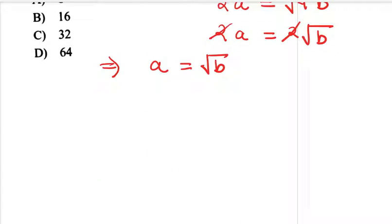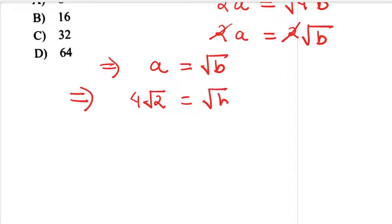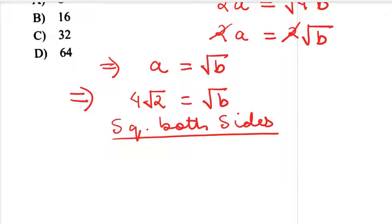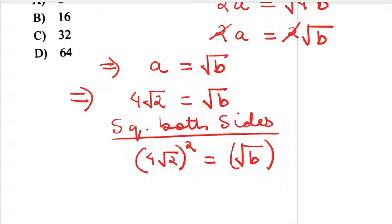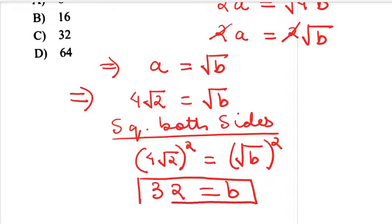That means we can substitute the value of a. So 4√2 = √b. In order to find the value of b, we square both sides. (4√2)² = (√b)², giving us 16 × 2 = b. So b = 32, which is option C.